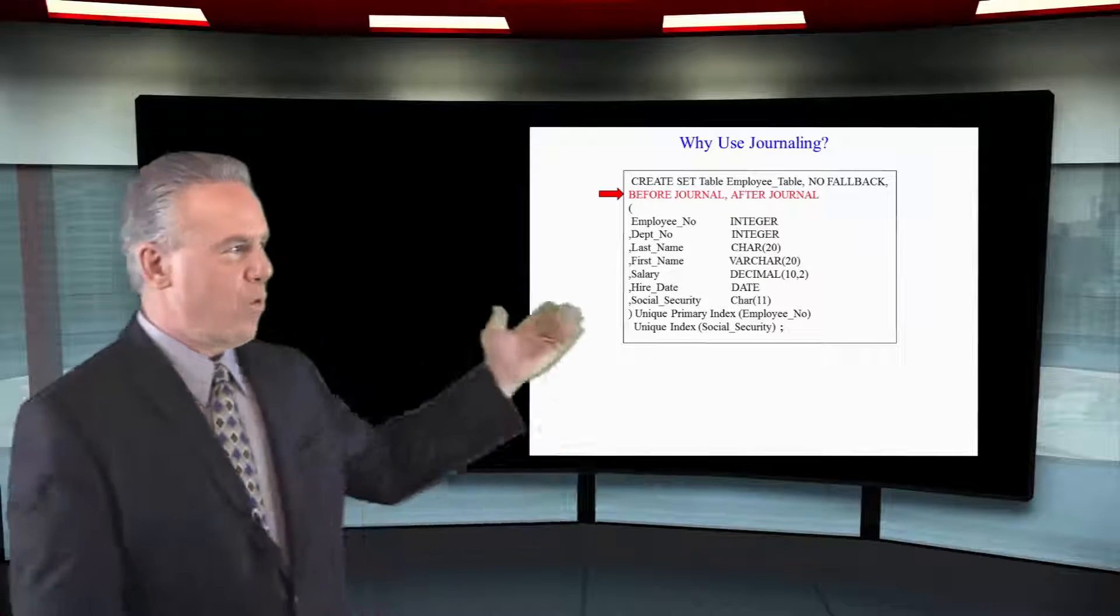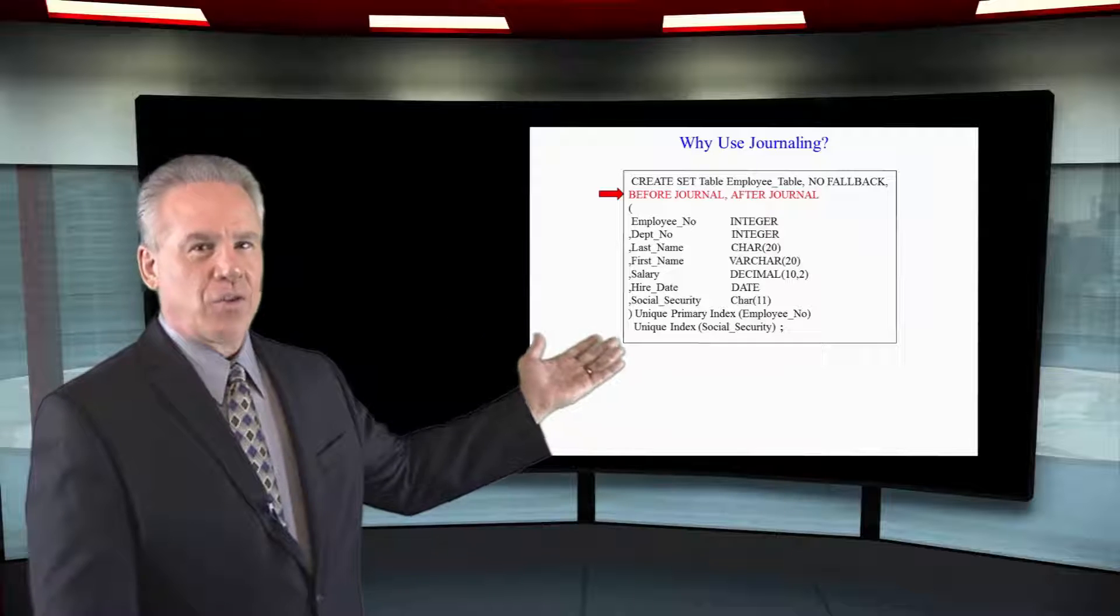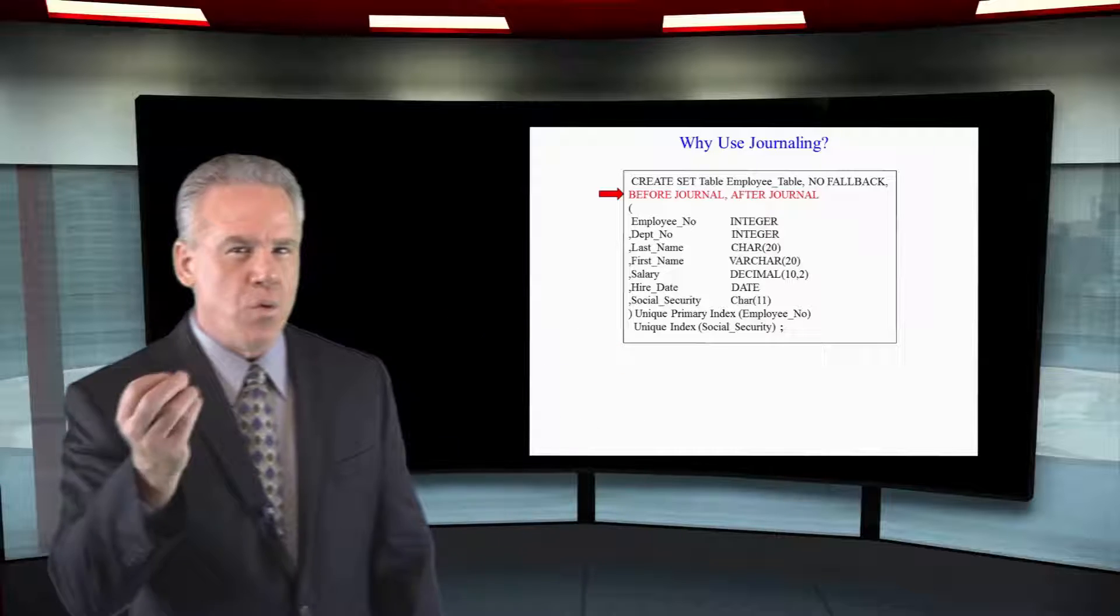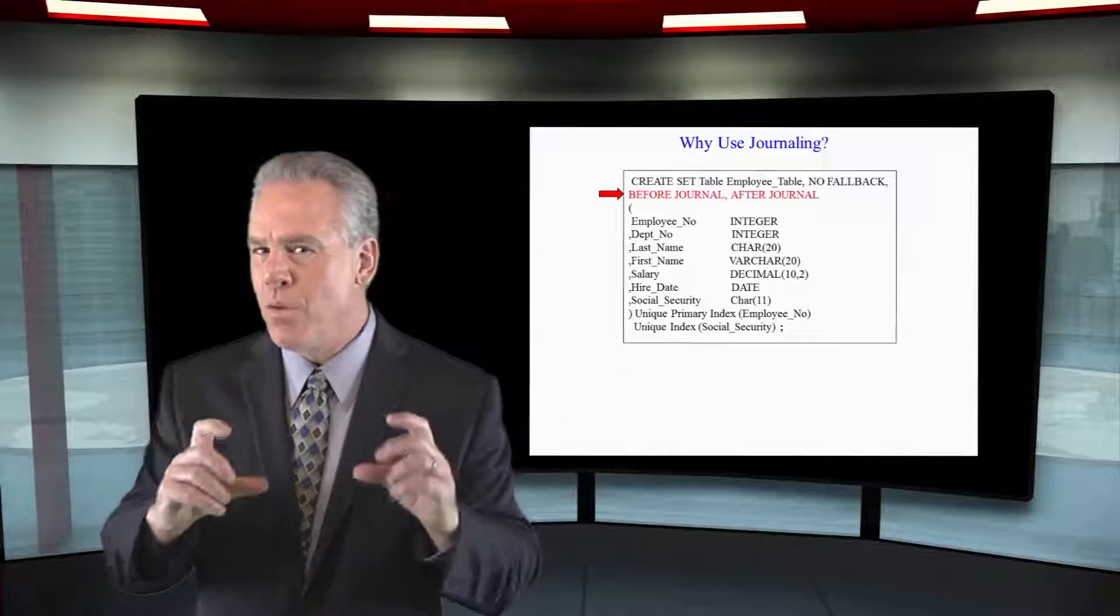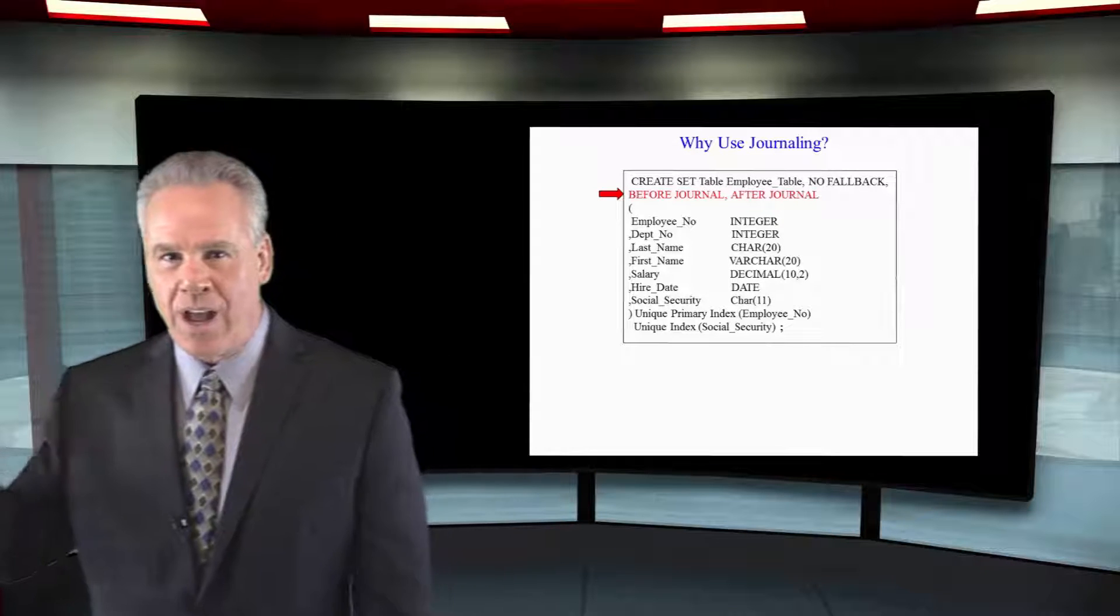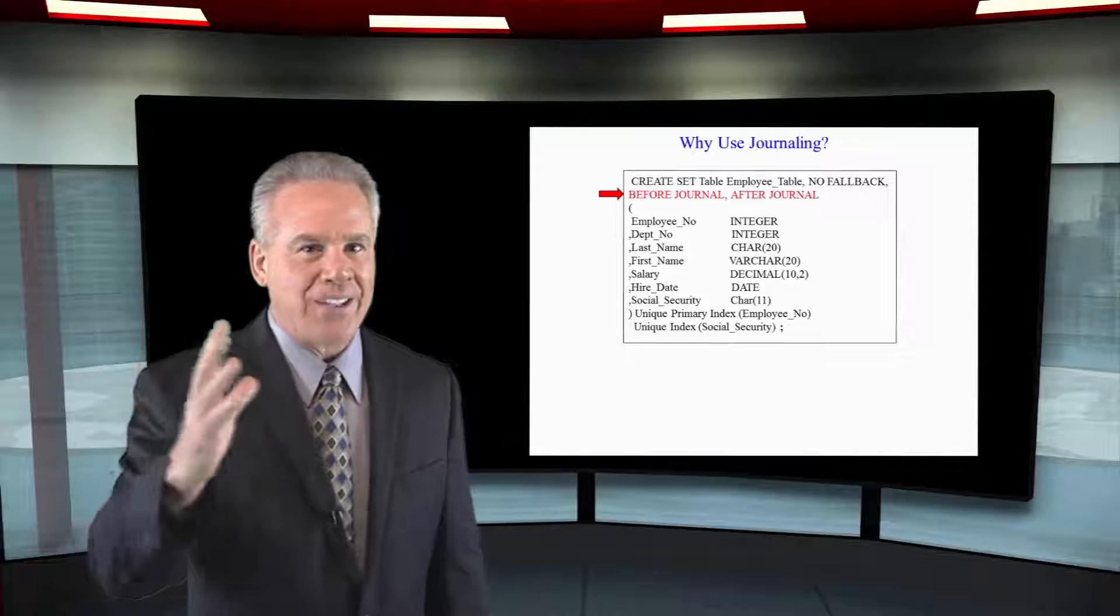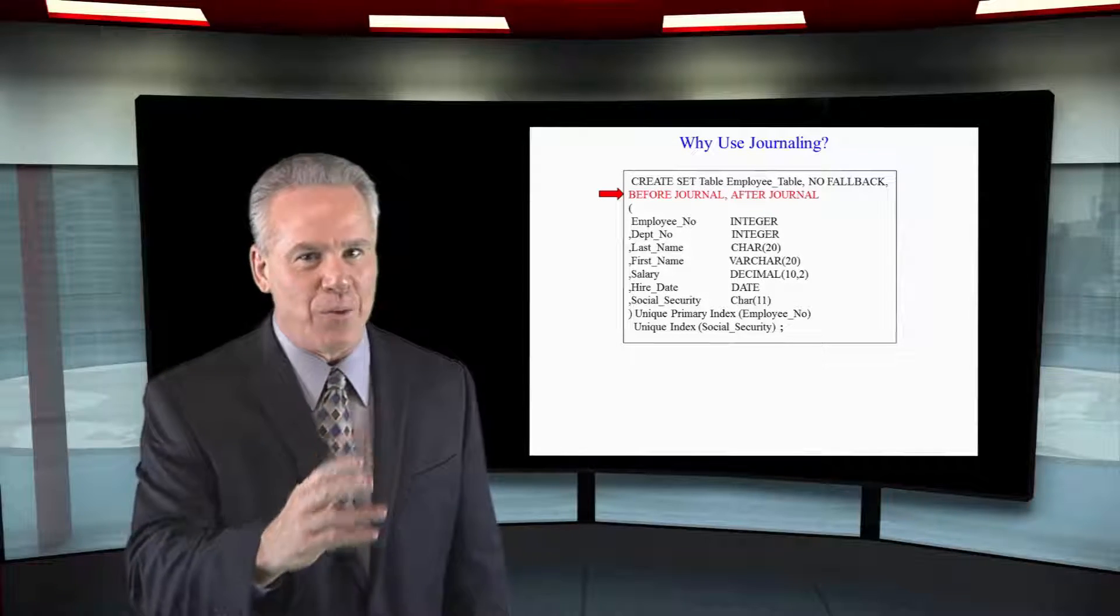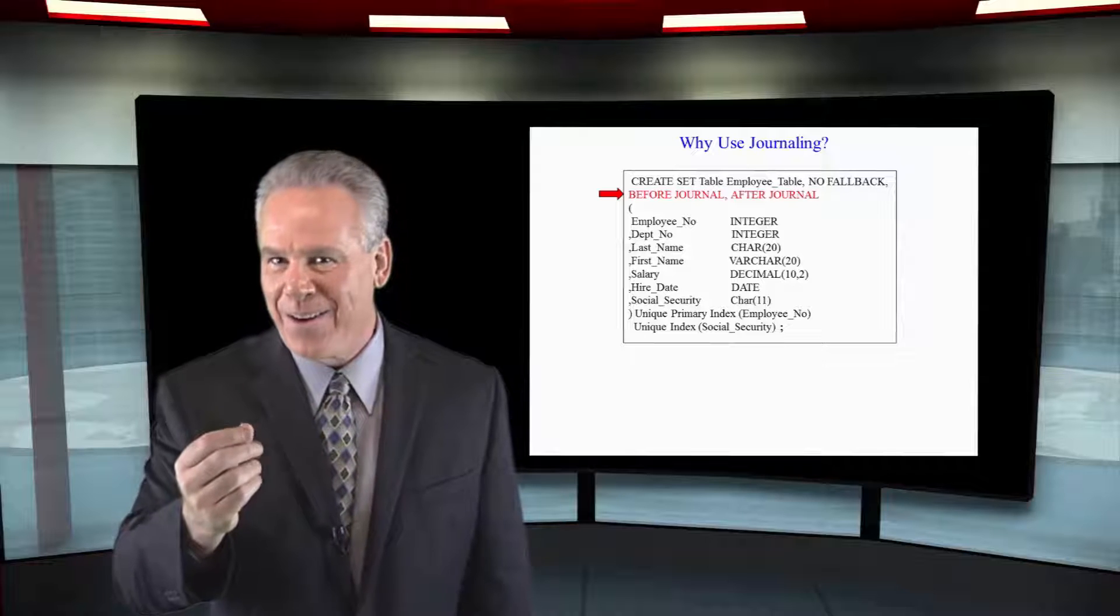Here's another way to get both a before journal and an after journal. Now a before journal takes a picture before the row changes and stores it permanently, in case you have a programming error or a logic error. Hey programmers, give everybody a 10% raise and they give everybody a 100% raise. We would be able to take the before journals at a certain point in time and bring those back to change things back to the way they were before that error happened.